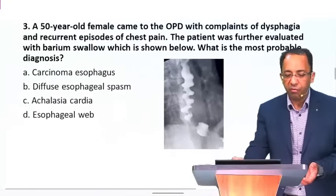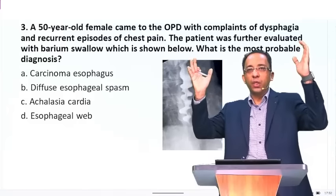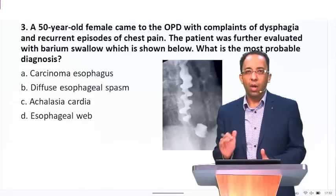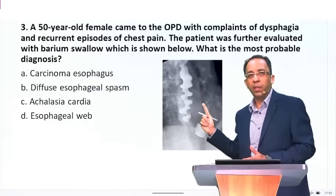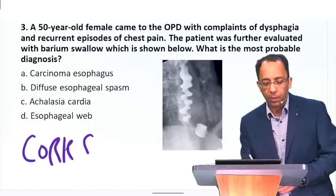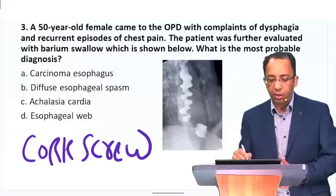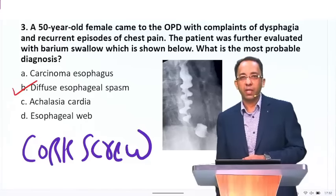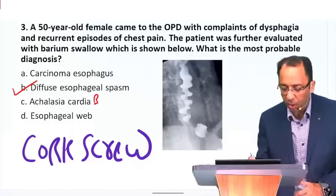A classic question often repeated in the FMG exam. In FMG they will either show you a dilated esophagus with a tapered distal end — that is achalasia cardia, the bird beak appearance — or they will show you multiple non-propulsive tertiary contractions in the esophagus giving rise to a corkscrew appearance. Corkscrew appearance is seen in diffuse esophageal spasm. Very important question.